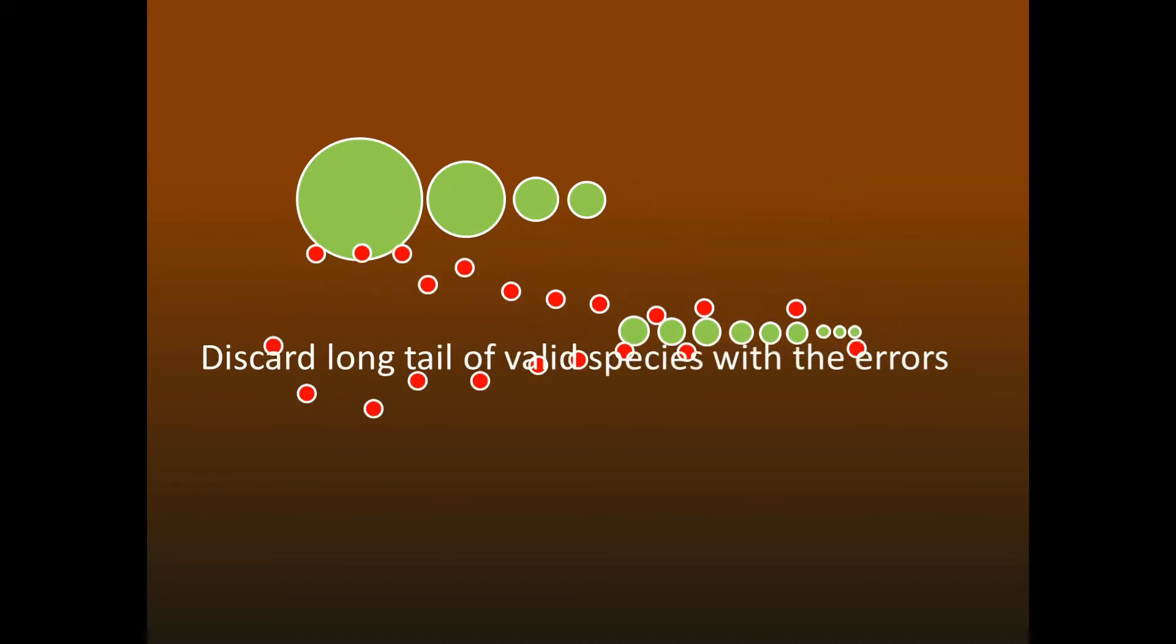On the other hand, if we use a method like UPARSE, DADA2, or UNOISE, which gives us good sequences, then we may be discarding a long tail of valid species along with the errors.